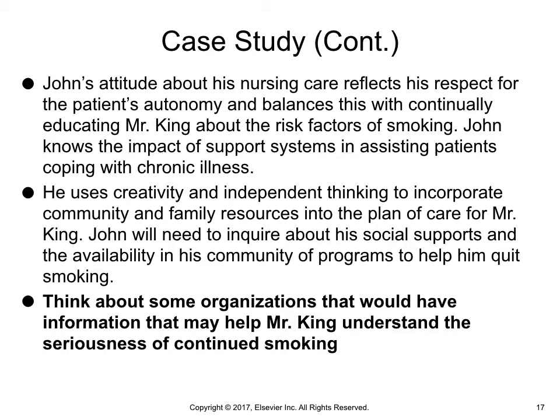John's attitude about his nursing care reflects his respect for the patient's autonomy, and he balances this with continually educating Mr. King about the risk factors of smoking. John knows the impact of support systems in assisting patients coping with chronic illness, and uses creativity and independent thinking to incorporate community and family resources into the plan of care for Mr. King. John will need to inquire about social supports and availability of community programs to help him quit smoking. Think about some organizations that would have information that may help Mr. King understand the seriousness of continued smoking.